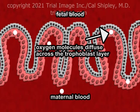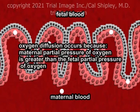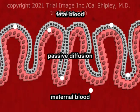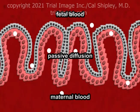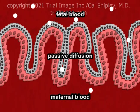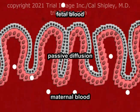Oxygen diffuses across the trophoblast layer from the maternal blood to the fetal blood. This diffusion occurs because the partial pressure of oxygen in the maternal blood is greater than the partial pressure of oxygen in the fetal blood. Because the oxygen molecules do not require any additional chemical substances to cross cell membranes, this process is known as passive diffusion.